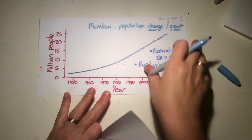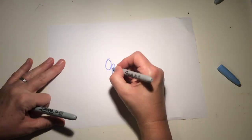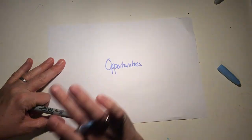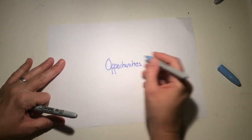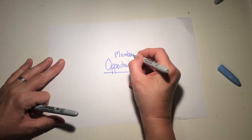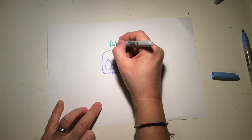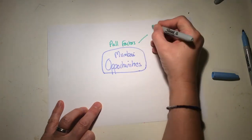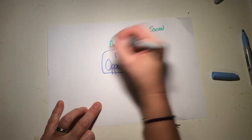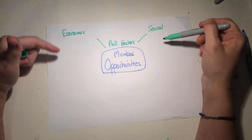Opportunities and challenges are explicitly mentioned in the specification — a key theme. Let's make a mind map of the opportunities created by urban growth. It's important to divide these into two types: social opportunities and economic opportunities. These are almost like pull factors for people arriving.